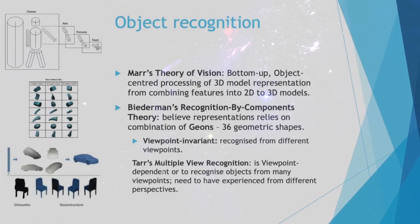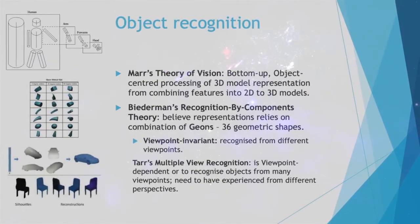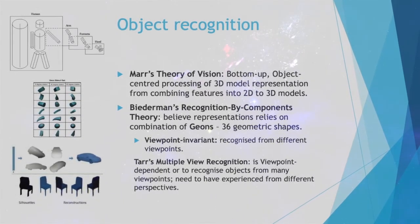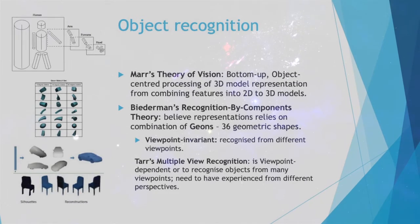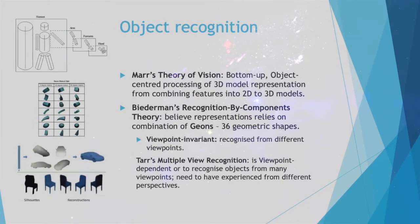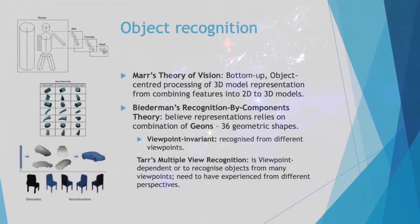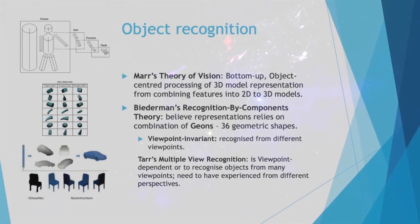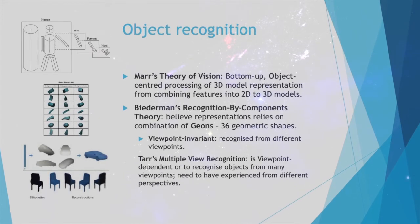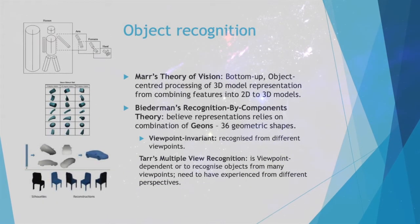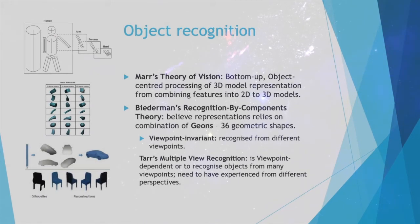Biederman's Recognition by Components theory proposed that representations relied on combinations of geons, which were 36 geometric shapes. This was viewpoint invariant, meaning people recognized objects from different viewpoints. Finally, Tarr's multiple view recognition is viewpoint-dependent — to recognize objects, individuals need to look at them from many different viewpoints and have experience from different perspectives and angles.